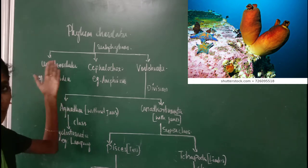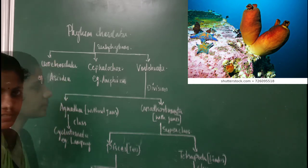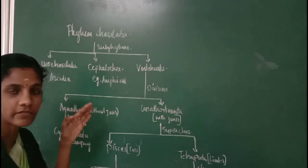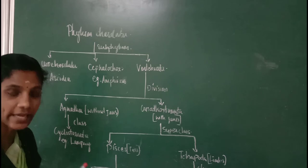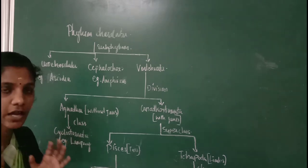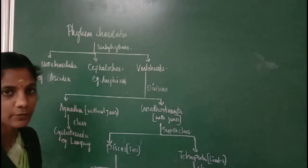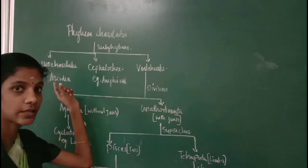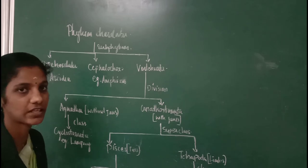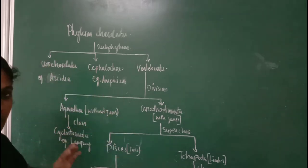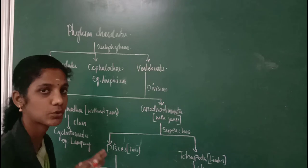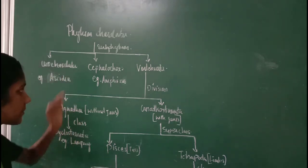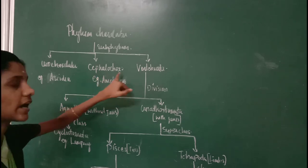Animals which come under the category of Cephalochordata have a notochord throughout their lifetime. The peculiarity of their notochord is that it extends from the anterior end to the posterior end of the body. Such organisms can be classified under the subphylum Cephalochordata.